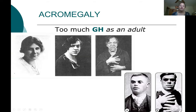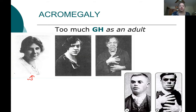What happens when you have too much growth hormone as an adult? The resulting condition is called acromegaly. It causes facial features and hands to enlarge, changing what you look like. Pictures of a woman over 20 to 30 years show how her nose, brows, and chin have enlarged, as has her hands — she doesn't look like how she used to. That's because there's too much growth hormone.